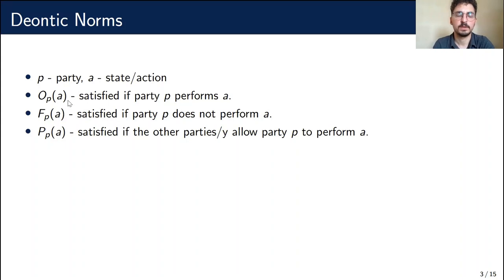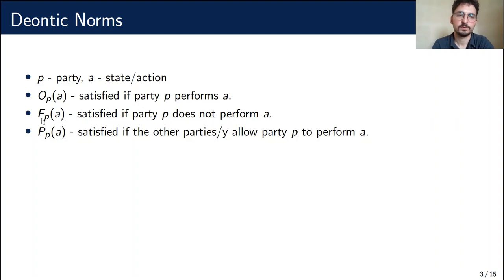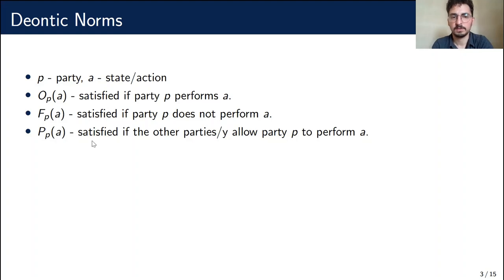Deontic norms are usually represented as follows: an obligation, a prohibition, and a permission. A party P may be obligated to do an action A, and that is satisfied if party P actually does A. They are forbidden from doing A, satisfied if A is not performed. And they are permitted to do A, which is satisfied only if the other parties allow party P to actually perform A.